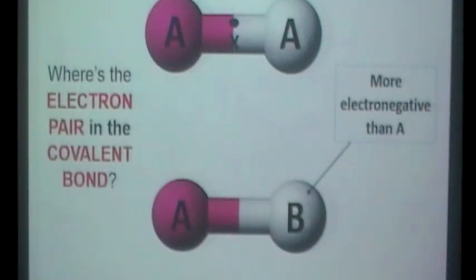If B is more electronegative than A it is winning the tug of war if you want to think of it like that. It's winning that tug of war so it's got a greater share of the electron pair, so they would sit a little bit closer to the B atom.